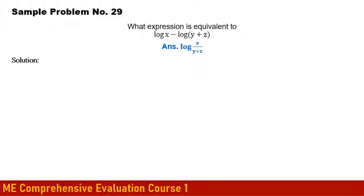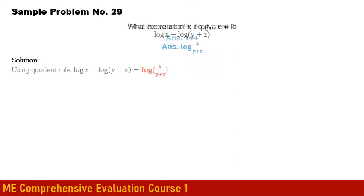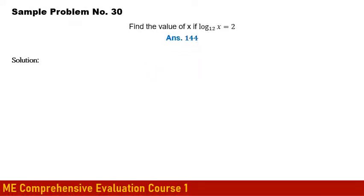Additional logarithm problems: Using the quotient rule, log x − log(y+z) = log[x/(y+z)]. To find x if log_12(x) = 2: x = 12² = 144.